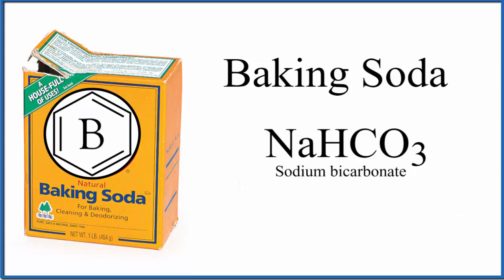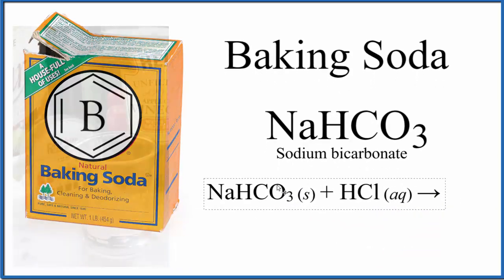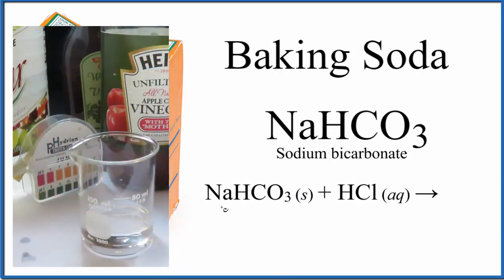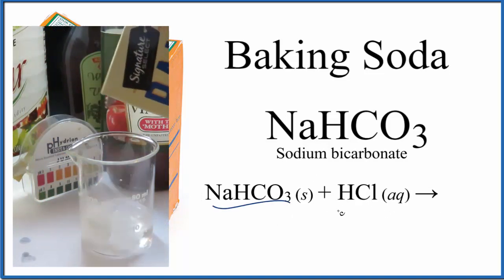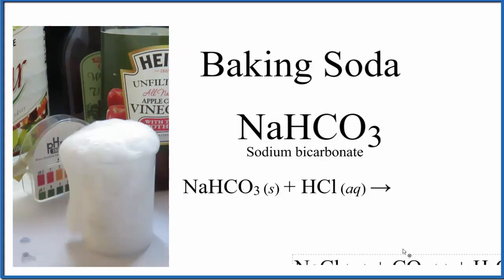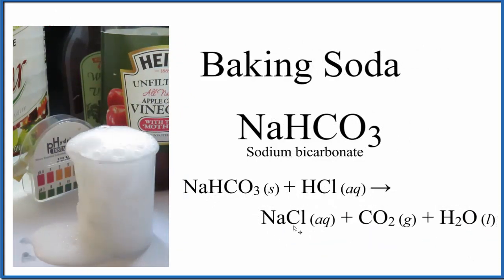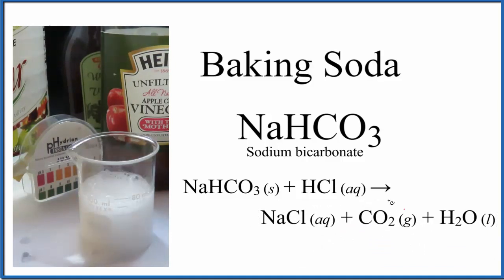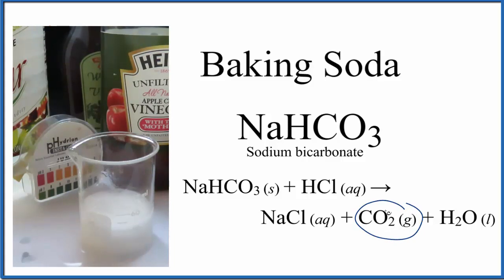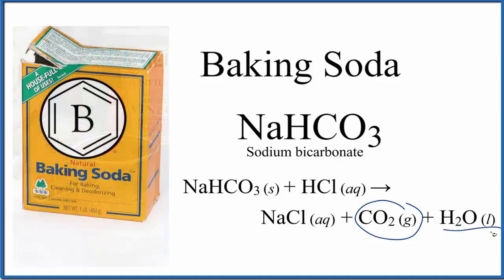If we look at the chemical reaction between baking soda and an acid — in this case hydrochloric acid — we start with NaHCO₃, which is a base. When we add hydrochloric acid, that's a neutralization reaction. We end up with a salt, NaCl, dissolved in water, plus carbon dioxide — that's the gas and those are the bubbles we're seeing. The carbon and oxygen come from our NaHCO₃, and we also get a little bit of water.